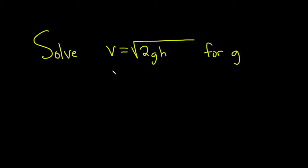Solve the equation v equals the square root of 2 times g times h for g. Let's go ahead and work through this solution.